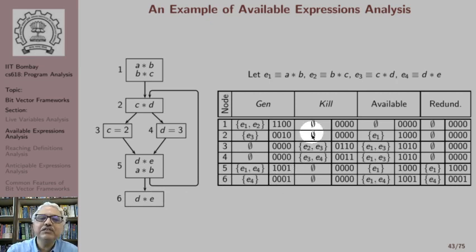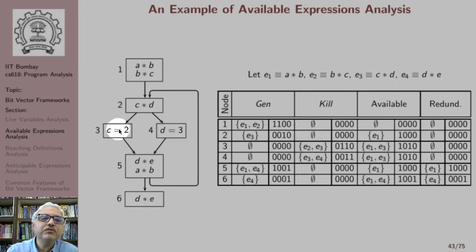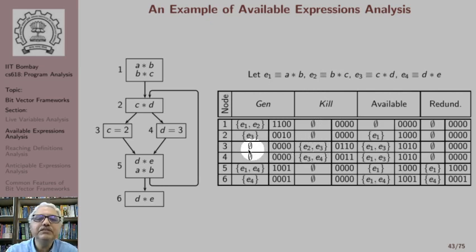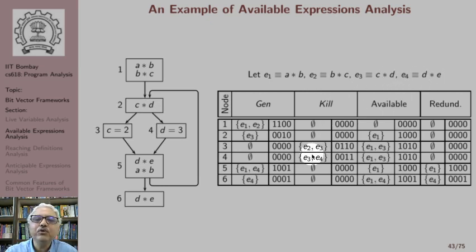As far as the KILL information is concerned, nodes 1, 2, 5 and 6 do not have any assignment, so their kill sets are empty and all bits are 0. In basic block 3, there is an assignment to c, which kills the availability of b*c (e2) and c*d (e3). Therefore e2 and e3 are killed, and the second and third bits are 1 while the remaining bits are 0. Basic block 4 contains an assignment to d, which kills e3 and e4, so the kill set has the last two bits as 1 and the first two as 0.